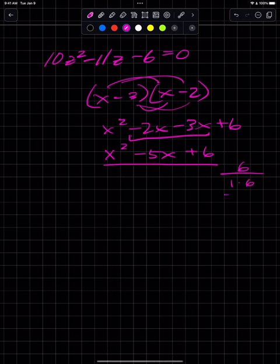And it's positive 6, so I got 1 times 6, negative 1 times negative 6, then 2 times 3, and negative 2 times negative 3. Then I'm looking for a factored pair that adds up to negative 5.